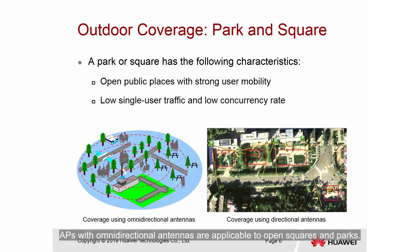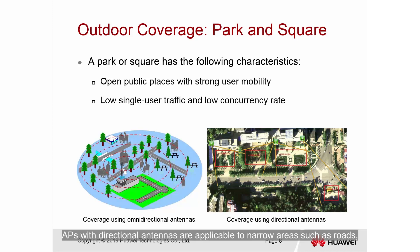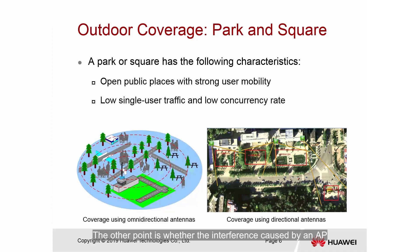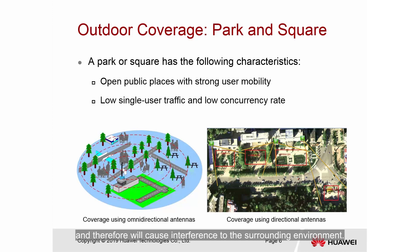APs with omnidirectional antennas are applicable to open squares and parks. There are two points to consider when selecting antenna type: one is the area shape — directional antennas suit narrow areas such as roads, while omnidirectional antennas suit open parks and squares. The other is whether interference to surrounding areas needs to be considered. APs with omnidirectional antennas provide Wi-Fi coverage in a 360-degree manner and therefore cause interference to the surrounding environment, in which case APs with directional antennas are used.